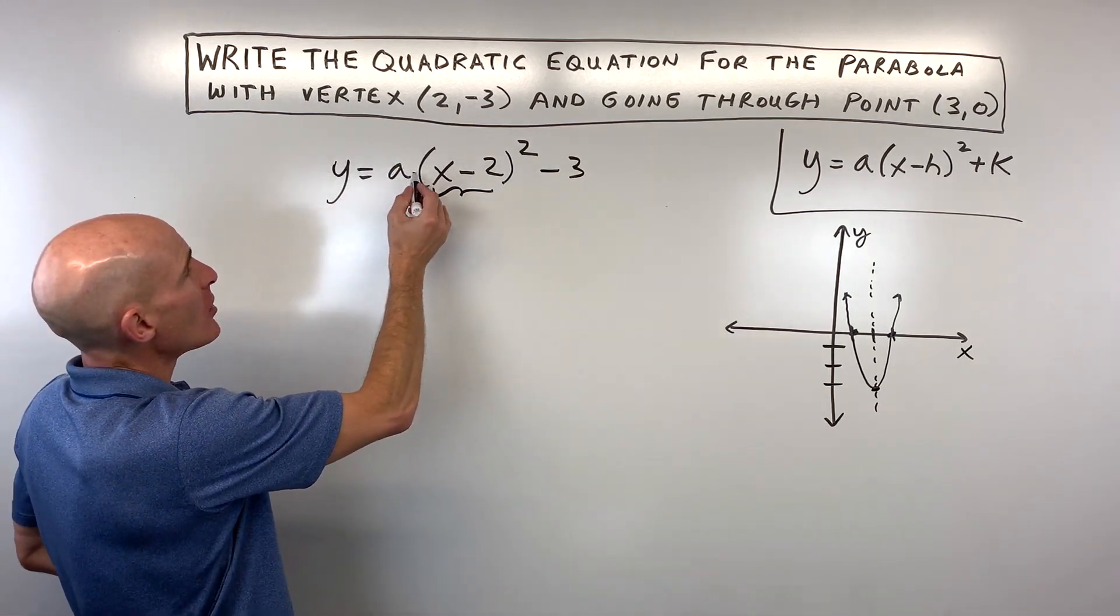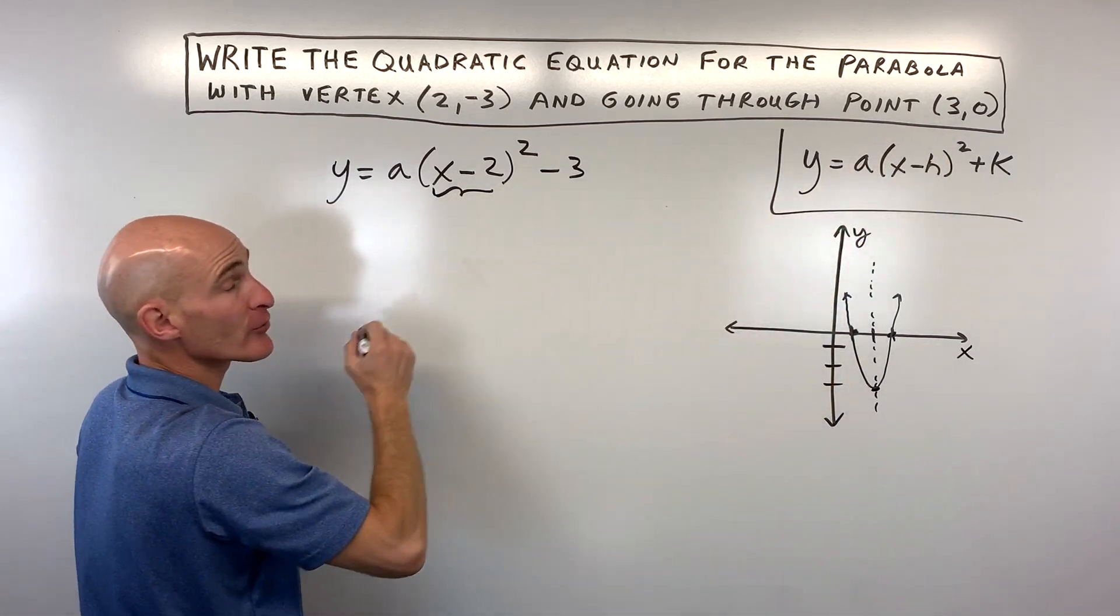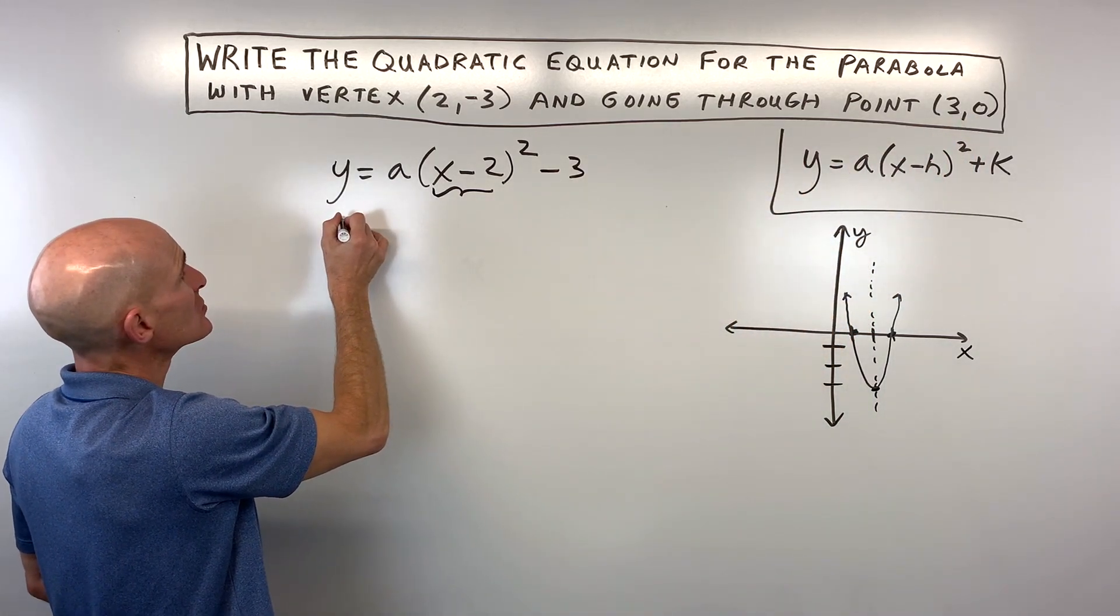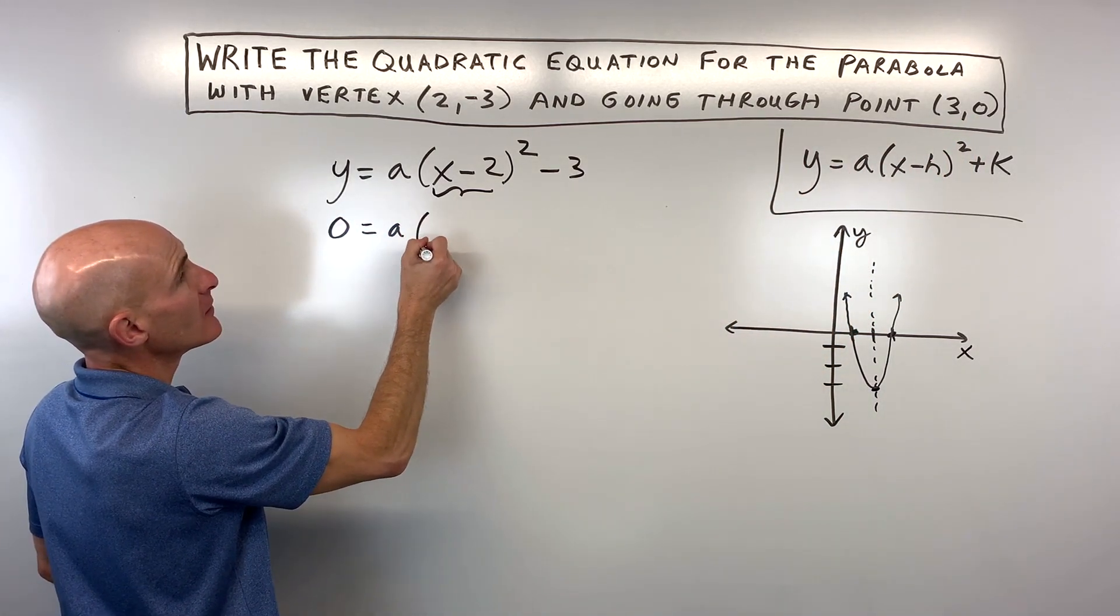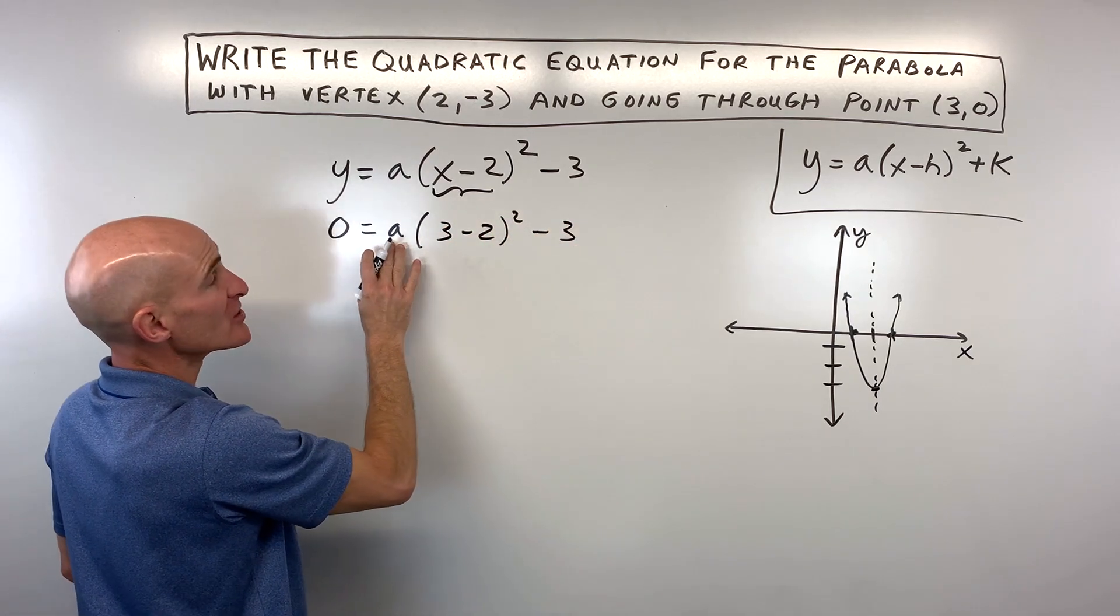Now all we have to do is solve for this a value, and that's why they're giving us this additional point on the graph, (3, 0). So this is our x and this is our y. So let's go ahead and substitute 0 in for y, 3 in for x, and then we can solve for a.